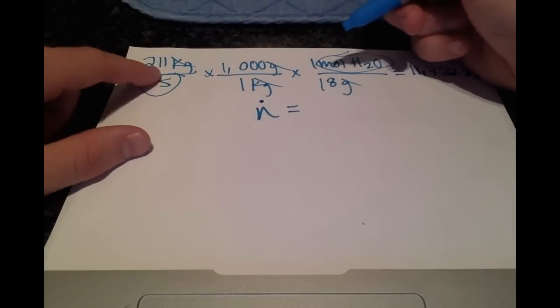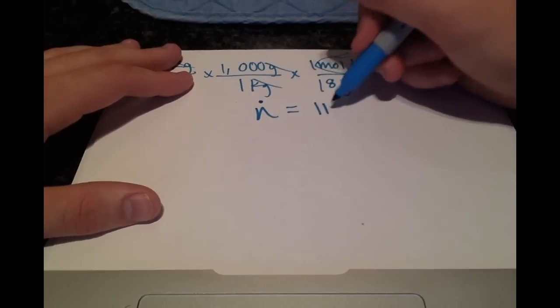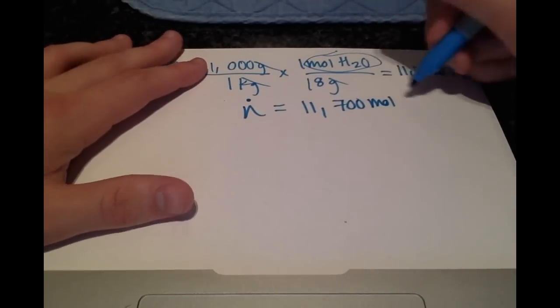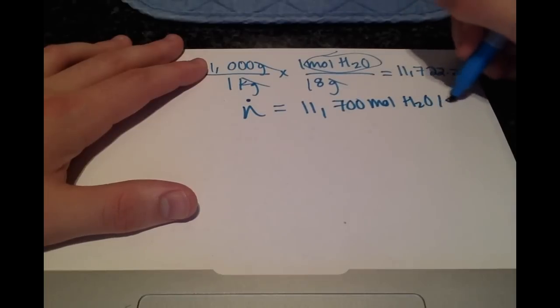And because we started with three significant figures, let's use three for the result, 11,700 moles of H2O per second.